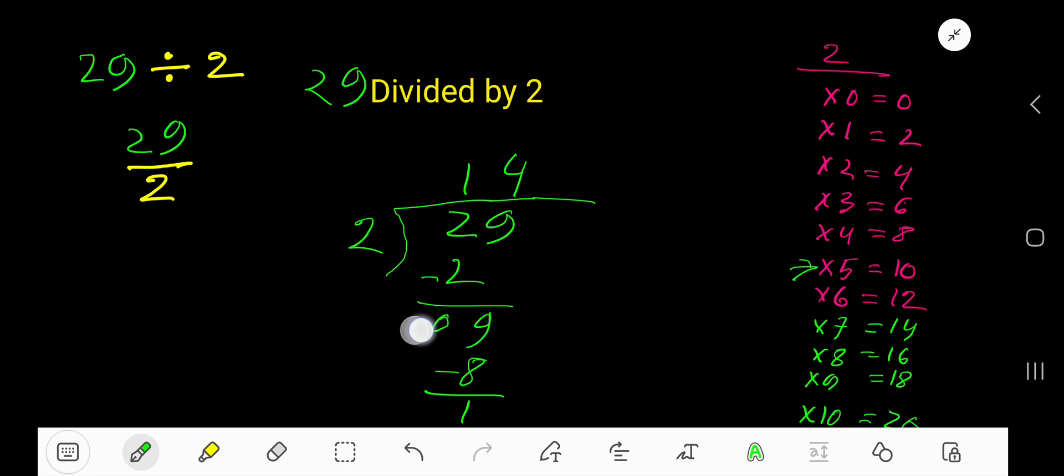Bring down this 9. 2 goes into 9 how many times? Look. 2 times 5 is 10, which is greater than 9. So, 4 is perfect. 2 goes into 9, 4 times. 4 times 2 is 8. Subtract. 1.